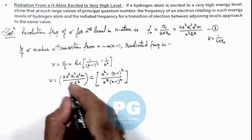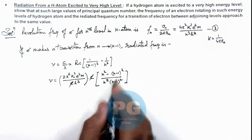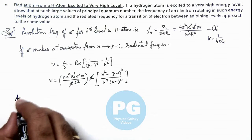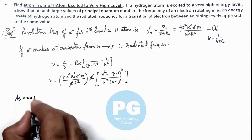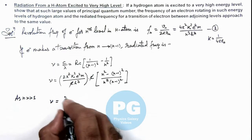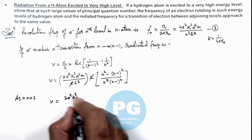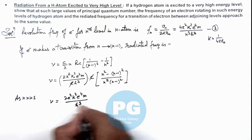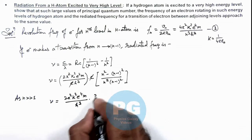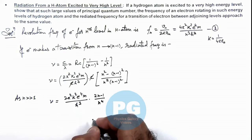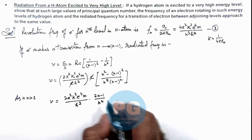So here this value will be approximated as 4π²k²e⁴m divided by n³h³, which is equation 2. We can see for n very very greater than 1, equation 2 approaches to 1, and this is what we are required to prove.